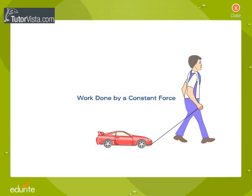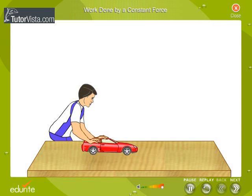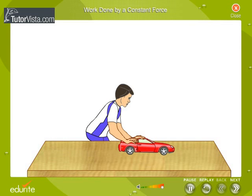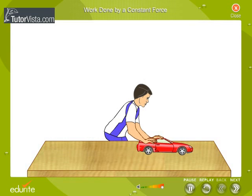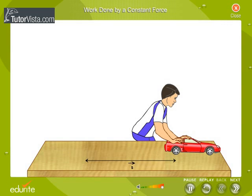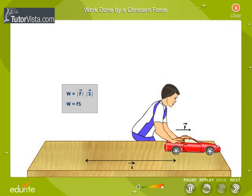Work done by a constant force. Here you can see a boy pushing a toy car. Let the car move through a distance S in the direction of the applied force F. Then the work done due to the application of the force is W is equal to modulus of F into modulus of S, that is W is equal to FS.